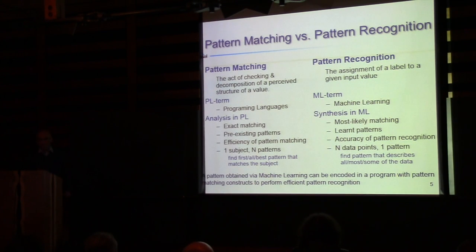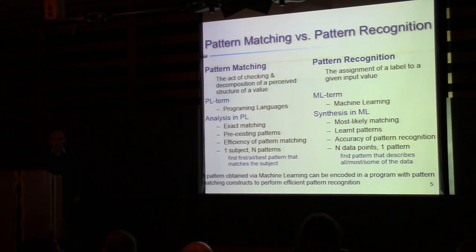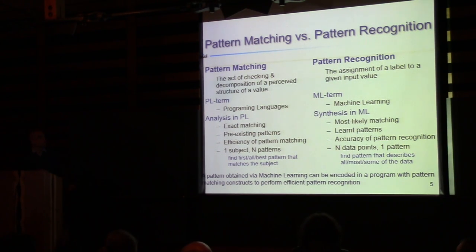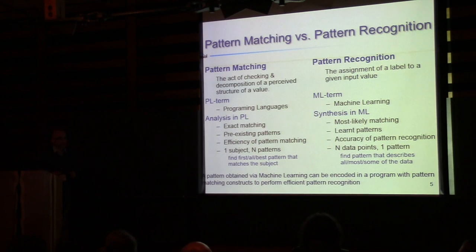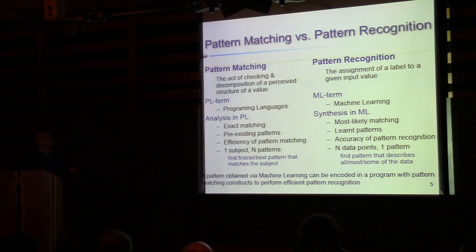A very important and subtle thing is the difference between pattern matching and pattern recognition. Pattern matching is essentially a programming languages term; pattern recognition is a machine learning term. They deal with similar stuff — here we try to check and decompose perceived structure, there we try to assign labels. In machine learning we are looking for the most likely matching, we are okay with false positives or false negatives, and patterns are learned. What matters there is the accuracy of pattern recognition, not efficiency.